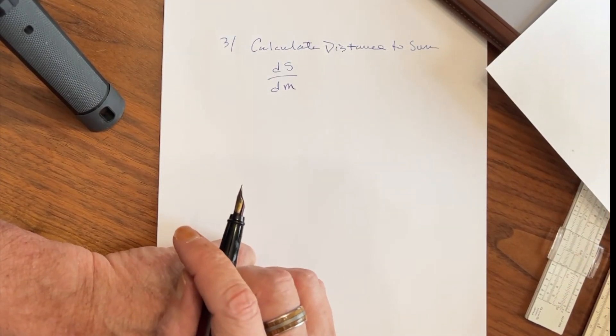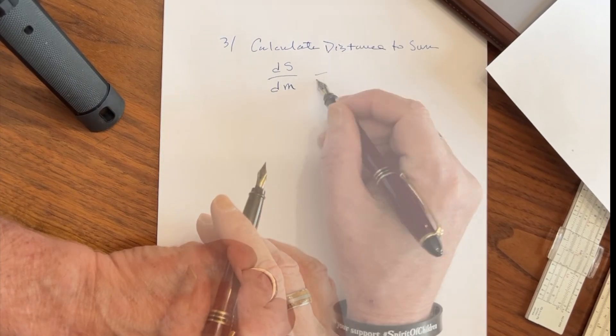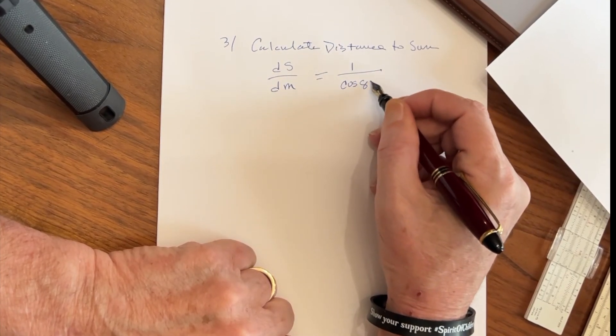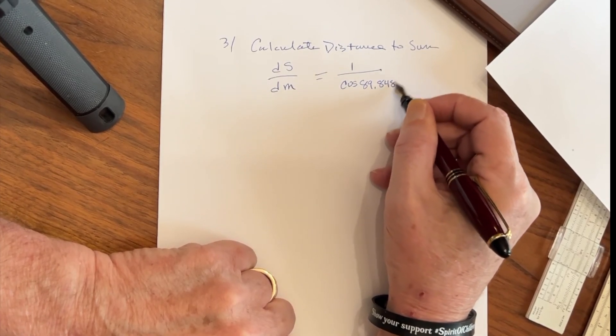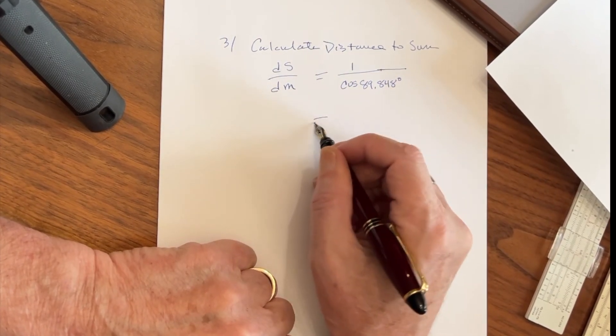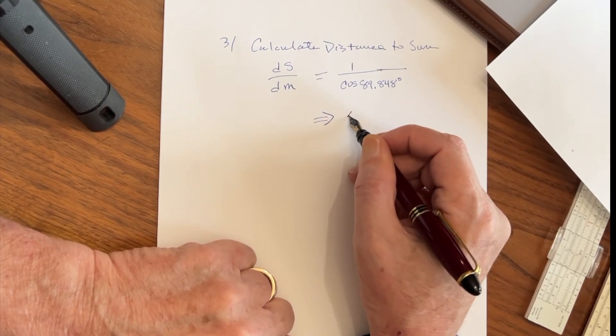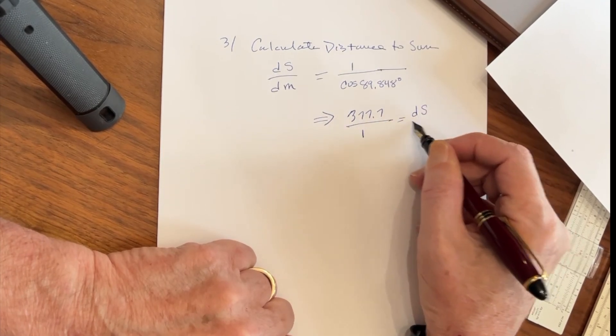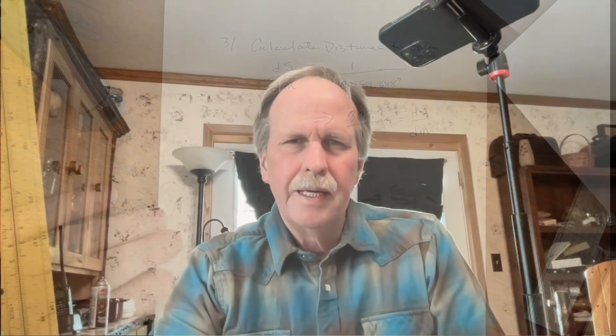Next we calculate the distance to the Sun in terms of distance to the Moon, which equals 1 over the cosine of 89.848 degrees. That works out to 377.7 to 1 — the distance to the Sun in terms of the distance to the Moon. I'm pretty excited about this, because looking it up and checking my previous videos, that angle is given as 89.85 degrees — and I'm pretty much on that. I think I got a pretty significant reading here.